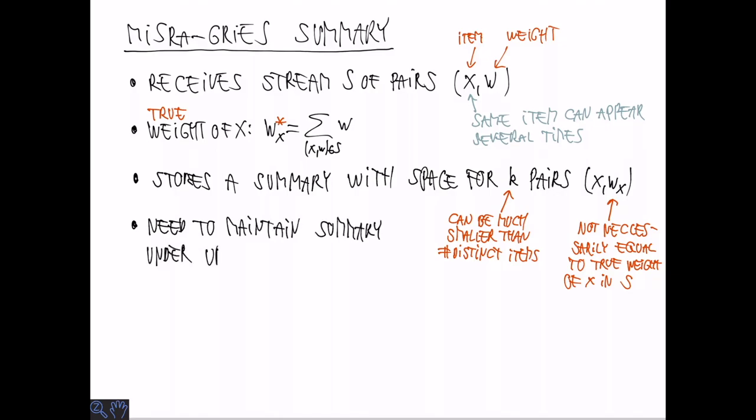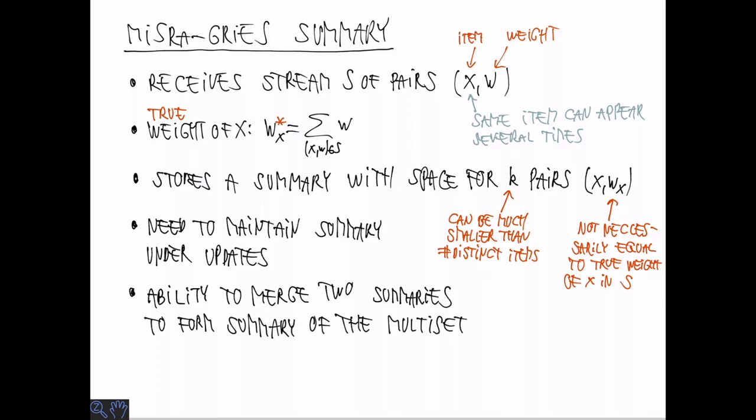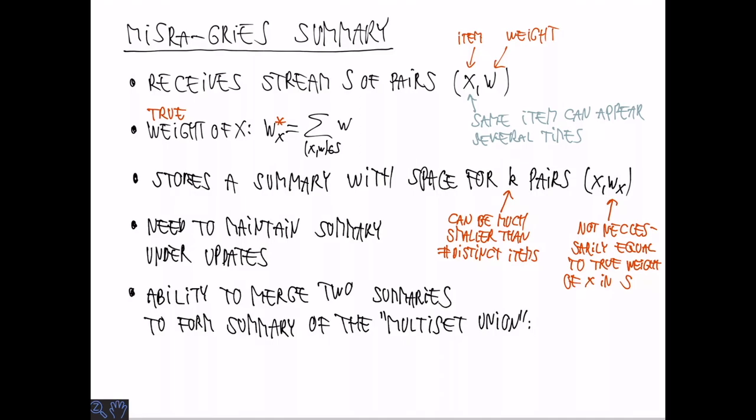We need to be able to maintain this summary under updates, that is new elements in the stream. Also we want the ability to merge two summaries into one of the same size. The merge summary should reflect the multiset union in the sense that the weight of each item should be the sum of the weights in the two summaries. So if the two summaries are S1 and S2, the true weight in the combined summary is simply the sum of the weights in the two summaries separately.